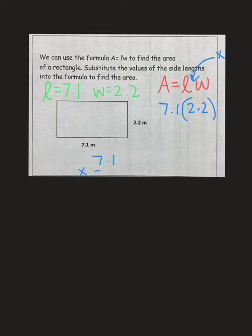So, let's do our work off to the side. 7.1 times 2.2. 1 times 2 is 2. 2 times 7 is 14. Put our 0. Cross out our 2. 2 times 1 is 2. 2 times 7 is 14. Then we add 2 plus 0 is 2. 4 plus 2 is 6. 1 plus 4 is 5. 0 plus 1 is 1. But you cannot forget your decimal.